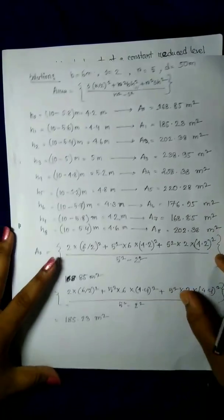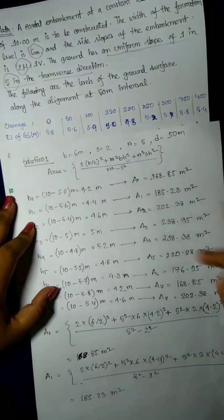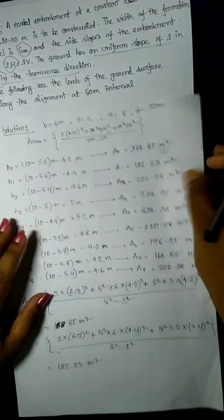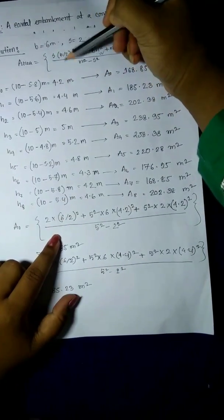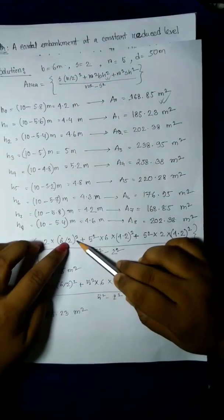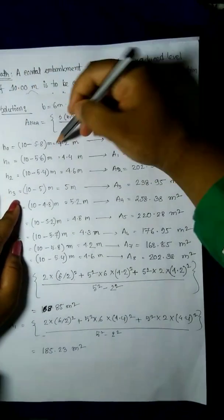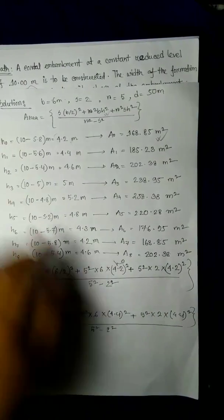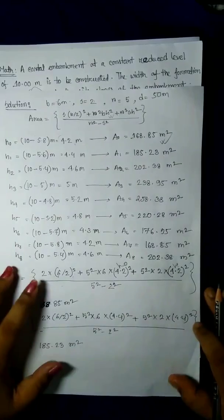If the ground surface is not level, then hr changes and the area changes accordingly. Substituting the values: s equals 2, b divided by 2 equals 6 divided by 2 equals 3, r equals 5, b equals 6, and hr equals 4.2. So plugging in hr equals 4.2 with r squared equals 25 into the two-level section formula gives the cross-sectional area.